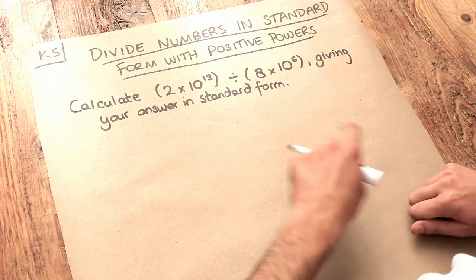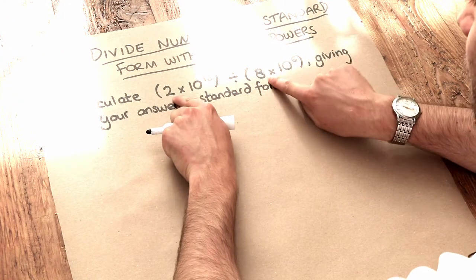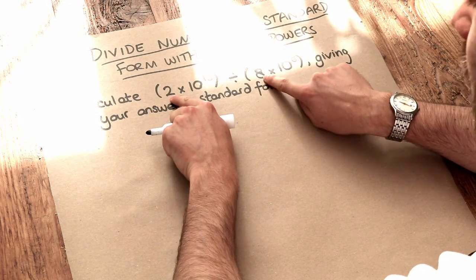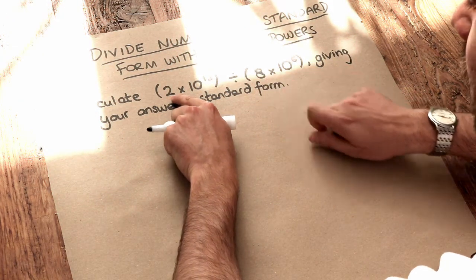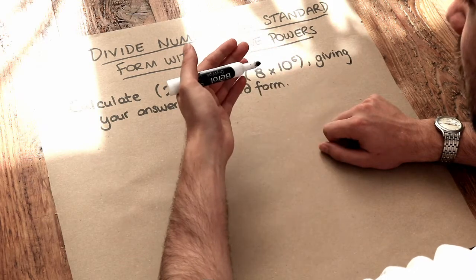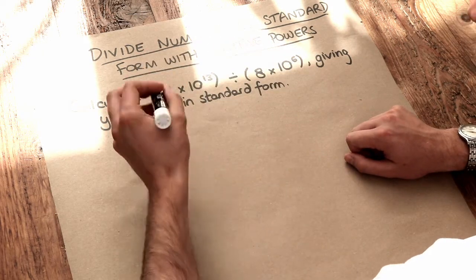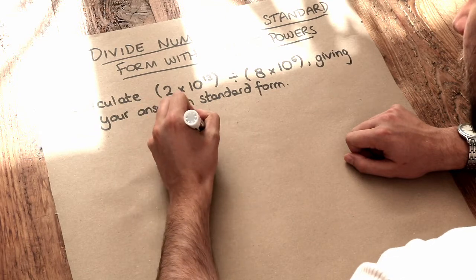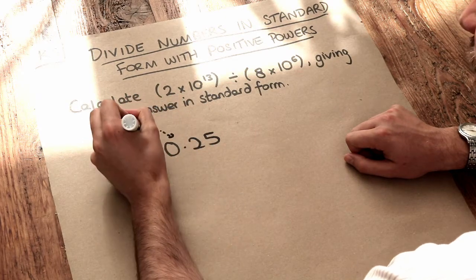The way we do it is to first look at the numbers in front of those 10s. So we're going to do 2 divided by 8. Now 2 divided by 8 is the same as one quarter, which is 0.25. So we get 0.25, that was 2 divided by 8.